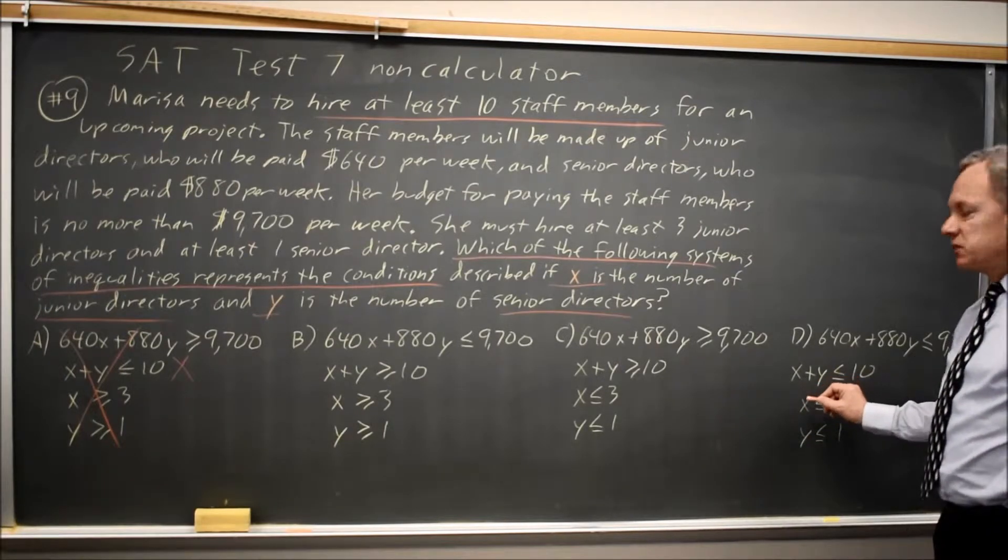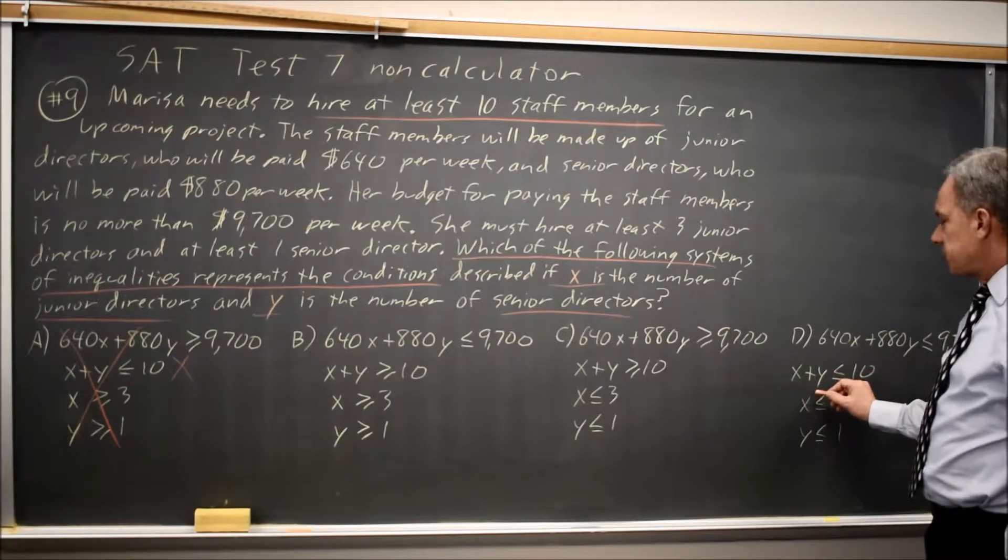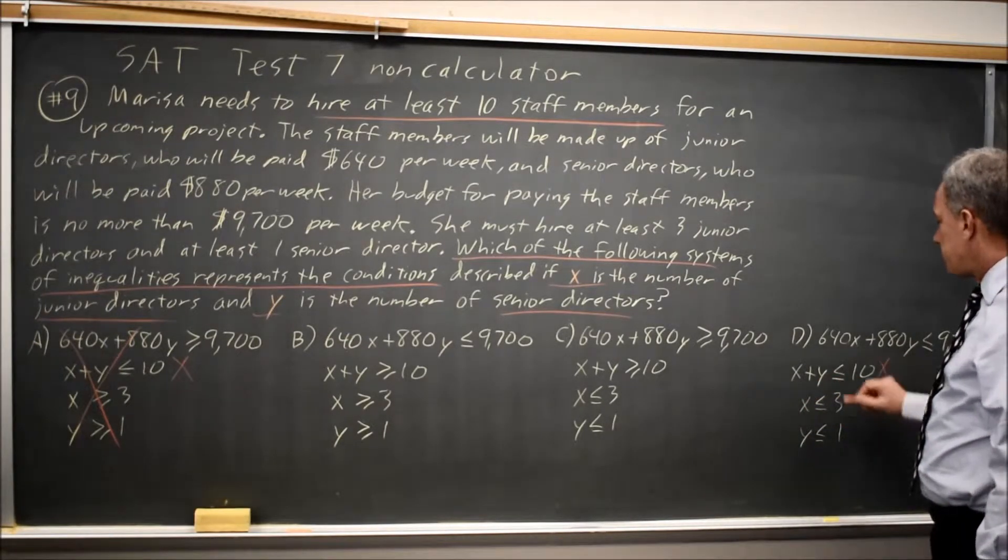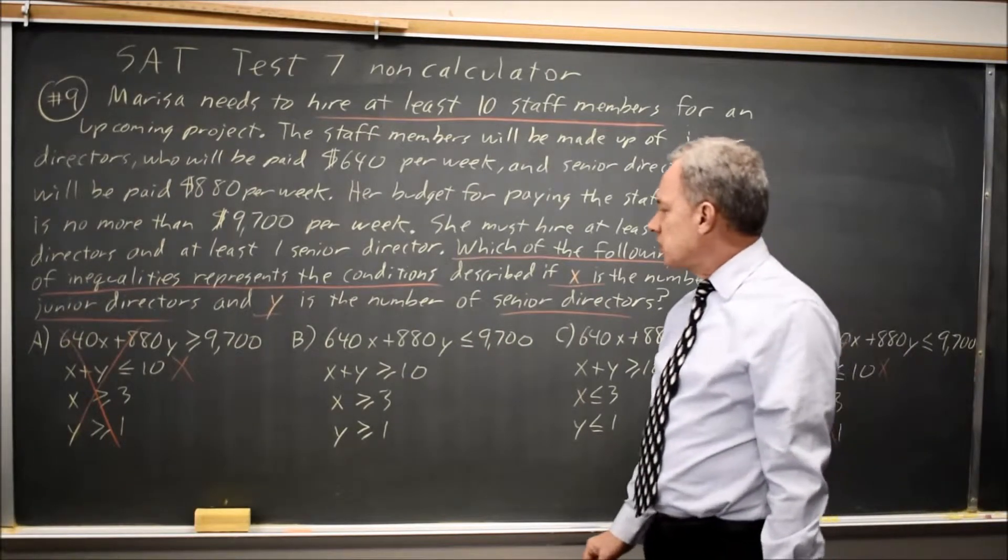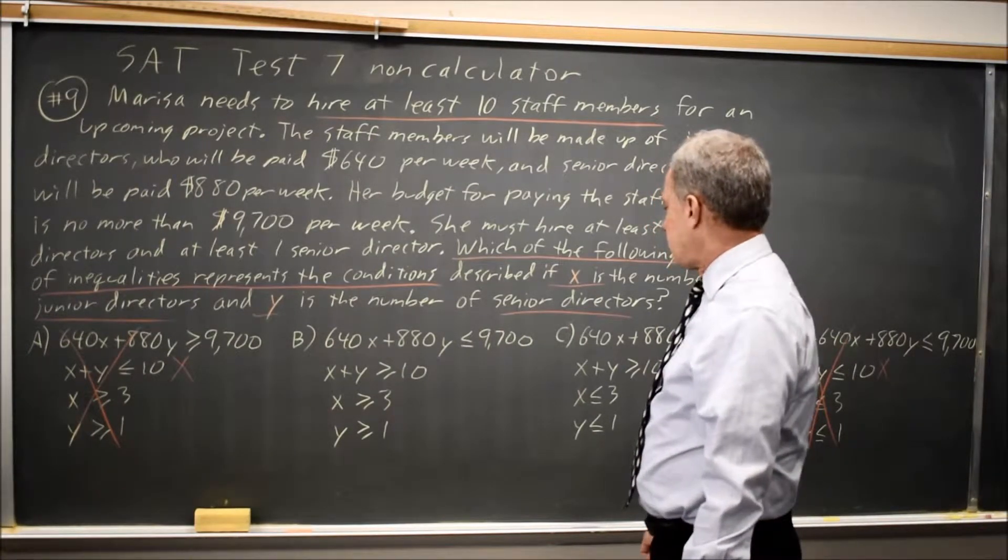Over here, in choice D, X plus Y less than or equal to 10. That's no more than 10, but we wanted at least 10. So choice D is wrong. We're down to choices B and C.